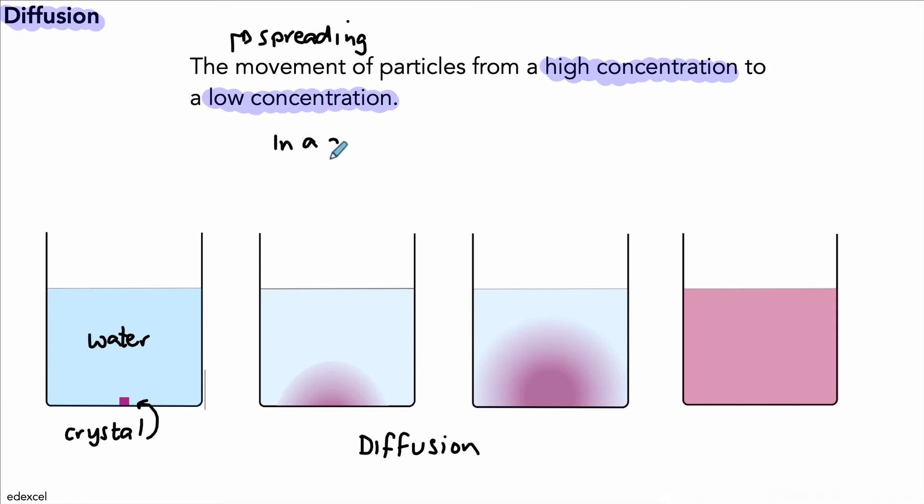It's important to note that diffusion can happen in a gas or in a solution. The example below is diffusion happening in a solution. Another way we can phrase this is the idea of particles moving down a concentration gradient, from a high concentration to a low.